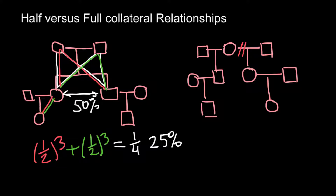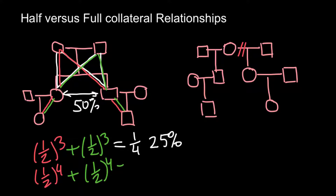How would two first cousins be related? Let's find out. We add another path — a red line and a green line. We count one, two, three, four steps through the grandmother, and one, two, three, four steps through the grandfather. So we have one-half to the power of four, plus one-half to the power of four, which gives us one-eighth, or 12.5% — that is the coefficient of relationship between two first cousins.